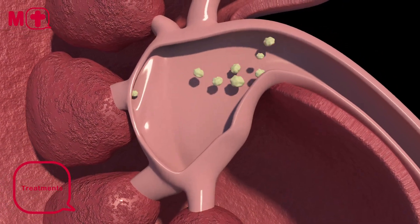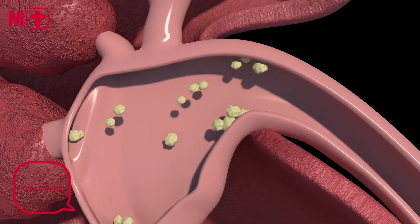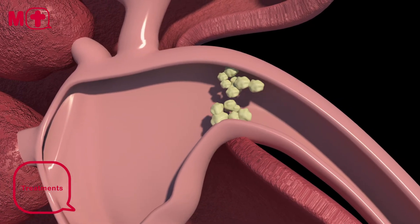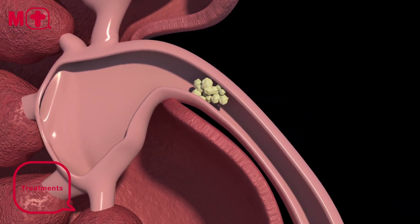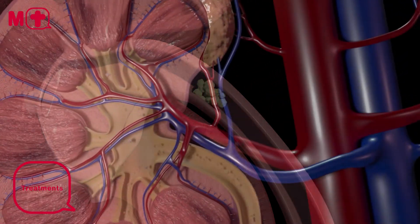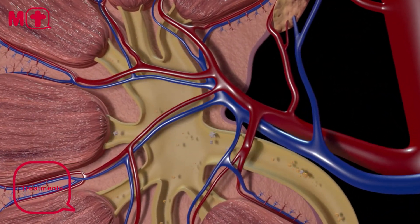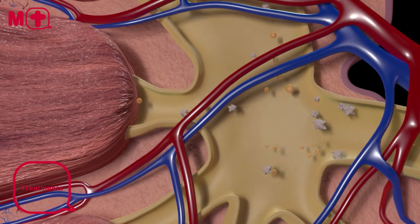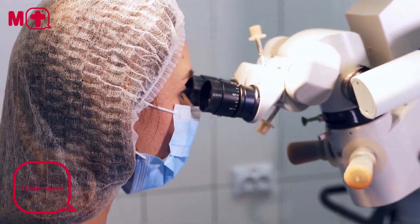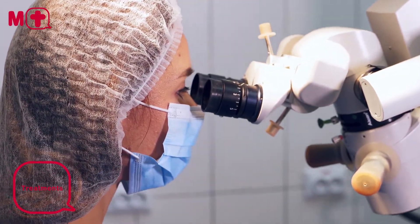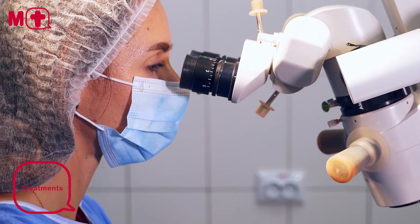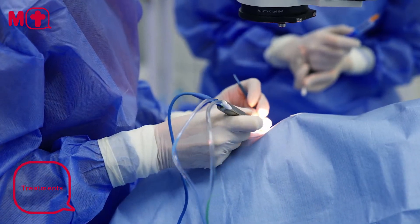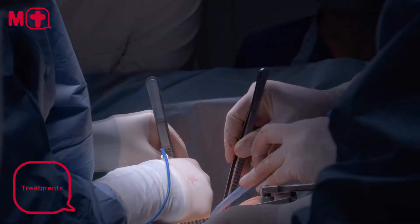If a stone is large enough to block the flow of urine and cause significant pain, bleeding, or an infection, your doctor will need to intervene by breaking the stone down into smaller pieces so they can be passed on their own. This can be achieved through non-invasive procedures such as shockwave lithotripsy, endoscopic removal, or, in rarer cases, traditional open surgery.